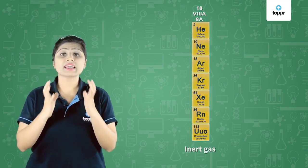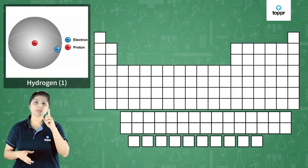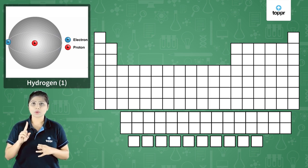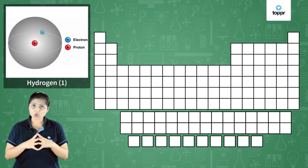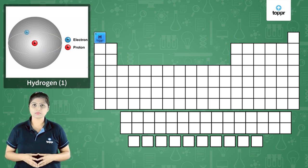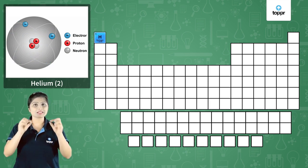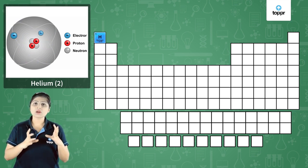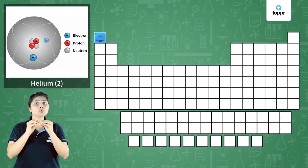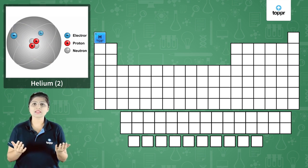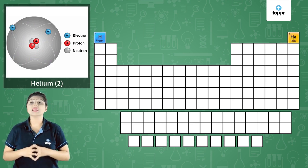Now let us see how to locate elements in the modern periodic table according to their electronic configuration. Hydrogen's atomic number is 1, so it has only 1 electron which goes in the first orbit. Hydrogen has only 1 orbit and 1 electron in the last shell, so it belongs to period 1 and group 1. Helium's atomic number is 2, so it has 2 electrons located in the first orbit itself. Helium also has only 1 orbit, so it is placed in the first period. But it has 2 electrons in the last orbit, meaning it has completed its duplet state — it is stable and does not react with anything. It is inert, so it is placed in the 18th column having inert gas elements.